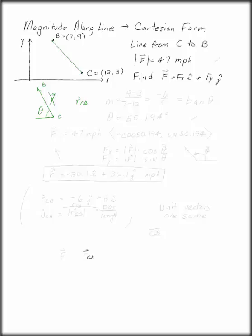So if you looked at rise over run, the slope of that line is 9 minus 3 over 7 minus 12, or minus 6 fifths. That is the slope of the line from C to B. It is also the tangent of that angle.